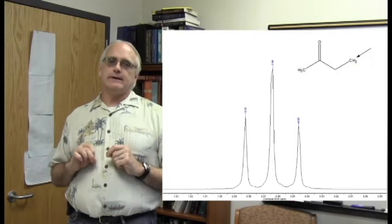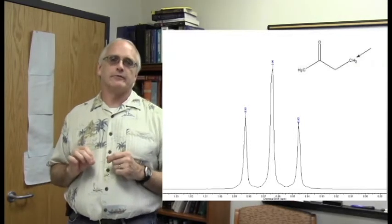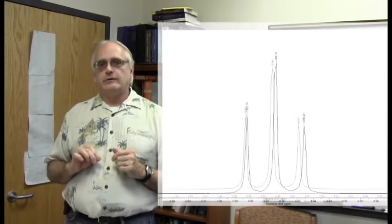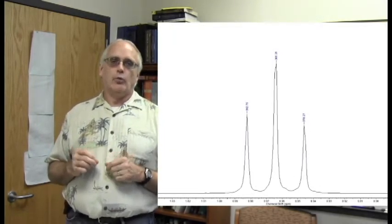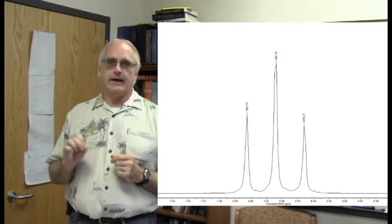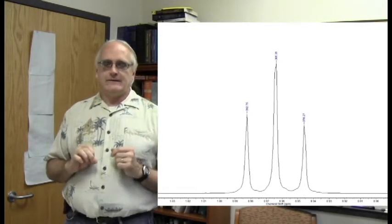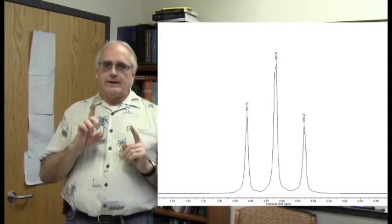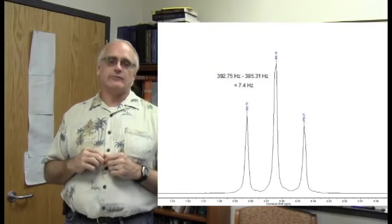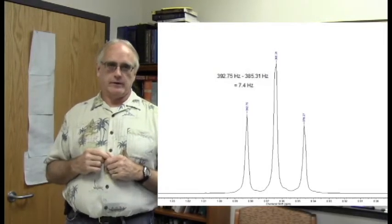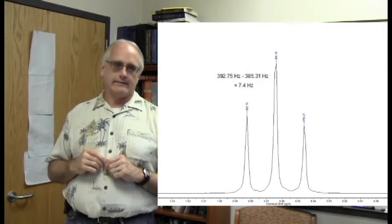Now, instead of letting the instrument label these peaks with their ppm values, 0.9 ppm or so, look at this one where I've switched it to actually labeling hertz. Now remember, on our particular instrument that we use here, 1 ppm is 400 hertz, so you notice these values are just under 400. But if you look at any two adjacent values here, if you take the value in hertz for these two peaks and subtract them, that is where the 7.2 coupling constant we measure here comes from. And the same thing happens if you go from the center peak over to the right instead of to the left.